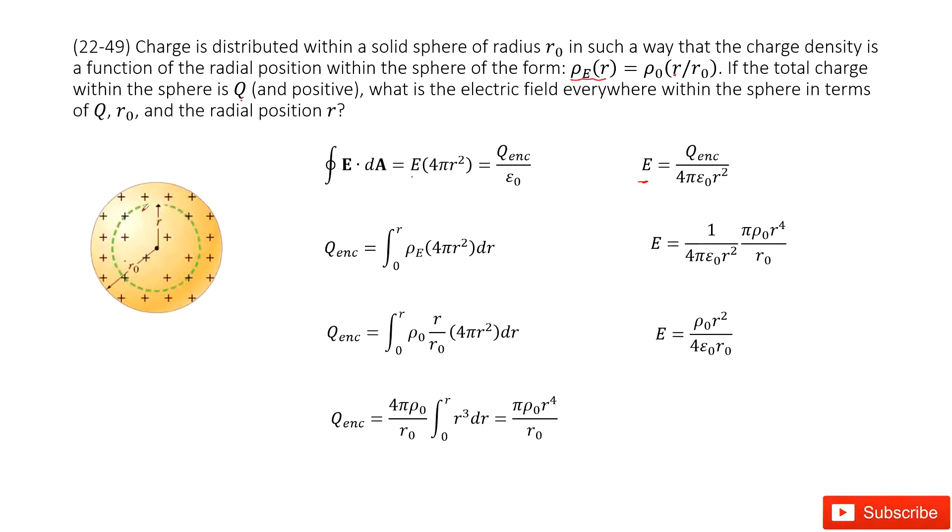And now we look at the enclosed charge in this Gaussian surface, just this part. We use the charge density times the volumes. We do the integral for these volumes because rho e changes with R. So we look at the surface for the shell. This is 4 pi R squared times dr.